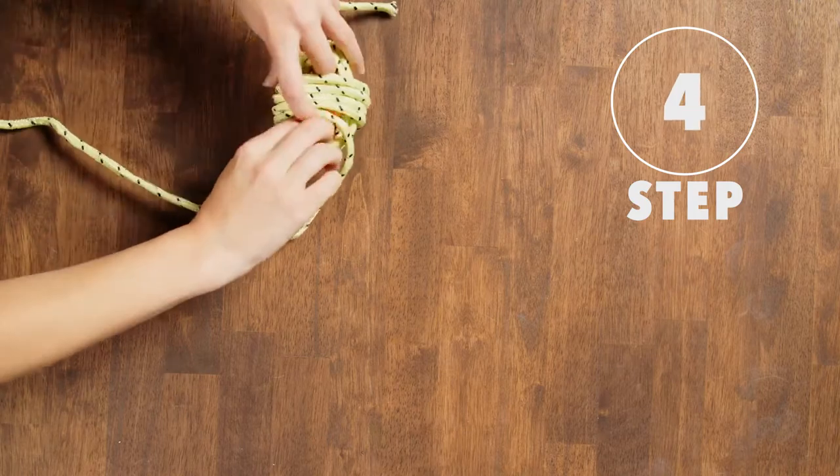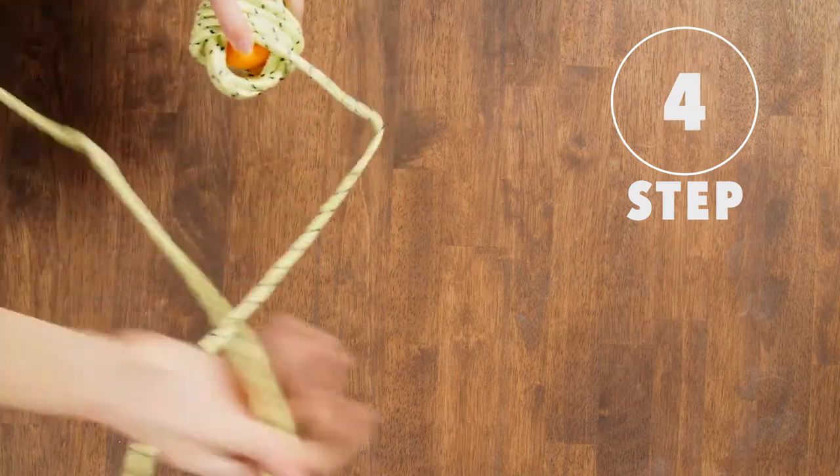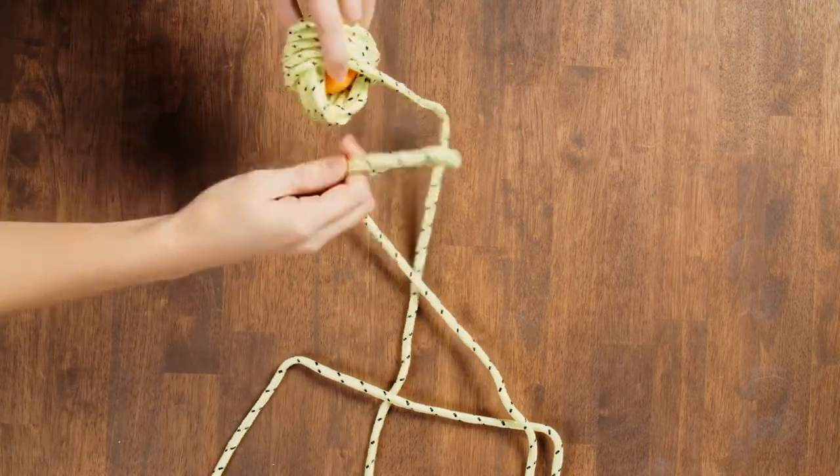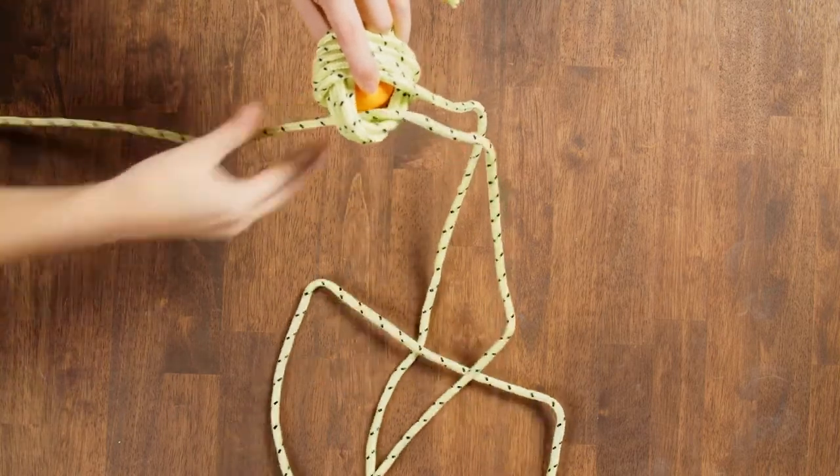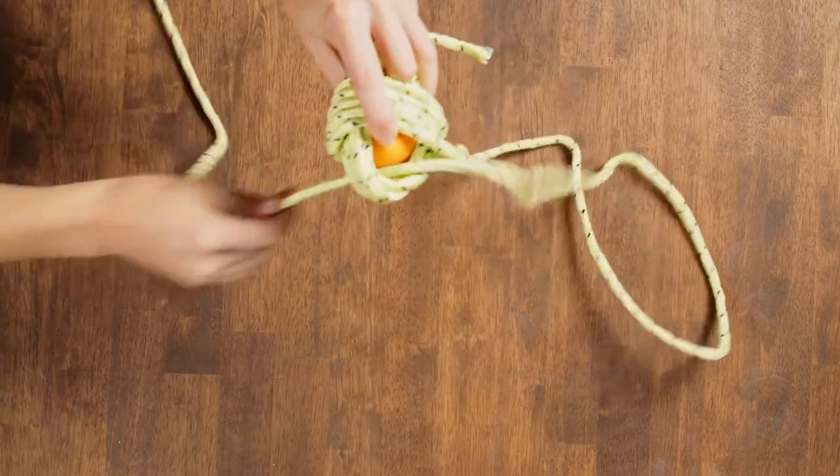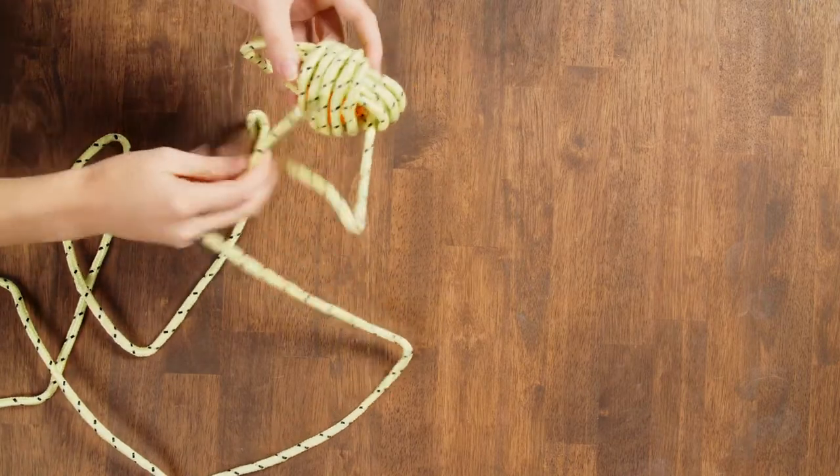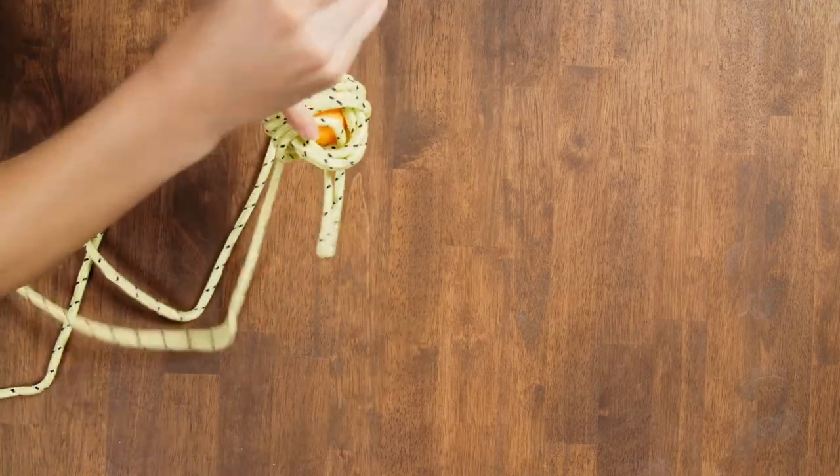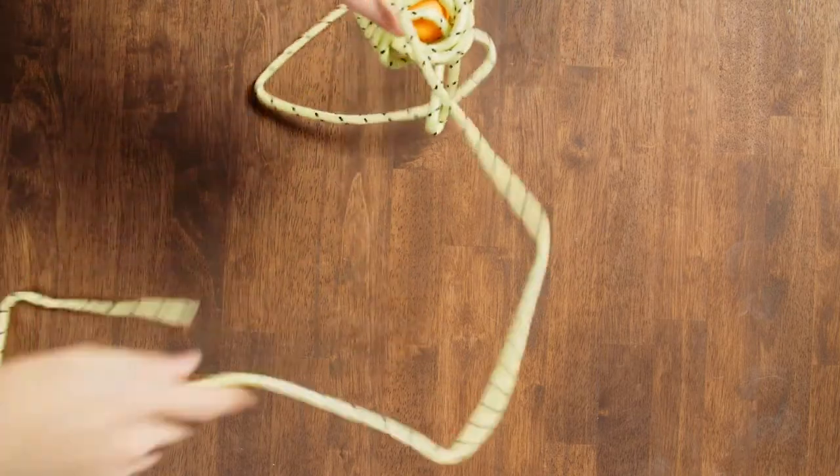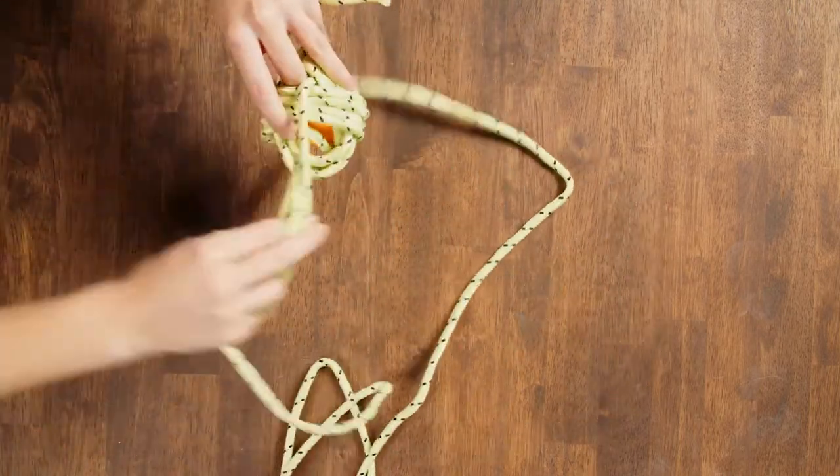Step 4. The long end of your rope will now be hanging out near an opening. Loop the end through that opening and in through the opposite opening. String it through those two openings a total of five times.